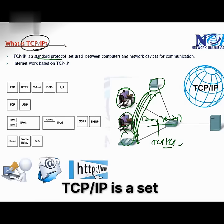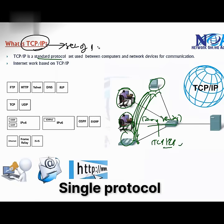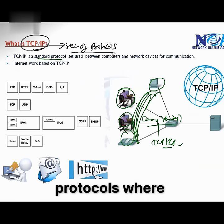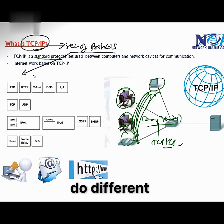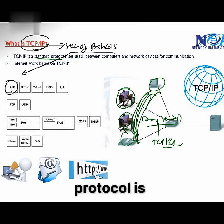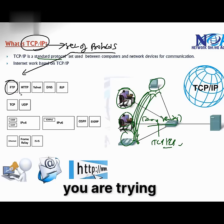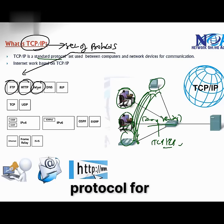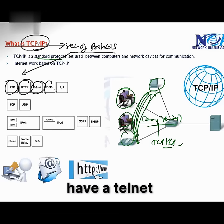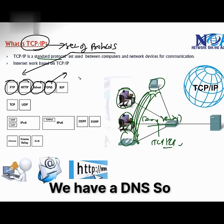Now, TCP/IP is a set of protocols — so it's not a single protocol, it's a set of protocols where we have different protocols that do different jobs. For example, FTP protocol is responsible for file transfer. If you are trying to do some web access, then there is an HTTP protocol. For remote access, we have Telnet. For name resolution, we have DNS.